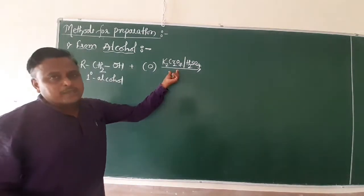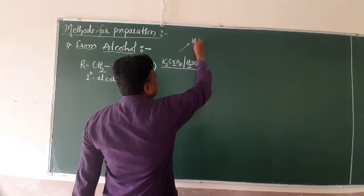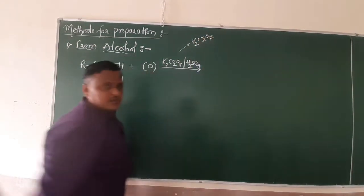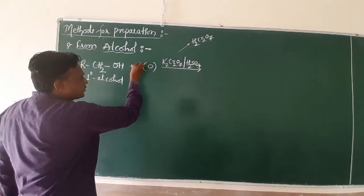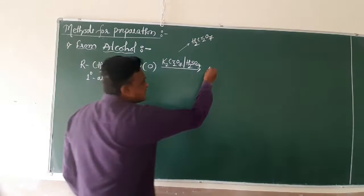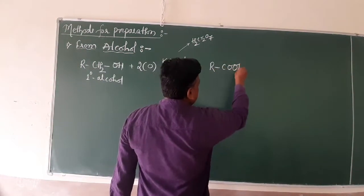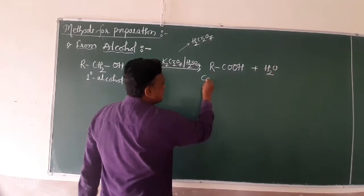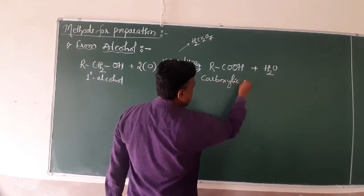Acidified potassium dichromate generates chromic acid. The formula is H2Cr2O7. Chromic acid is a powerful oxidizing agent — it can completely oxidize the primary alcohol, leading to the formation of carboxylic acid with the release of water.